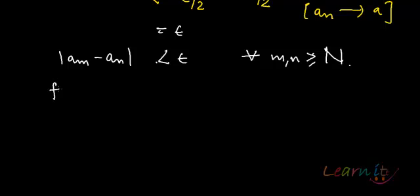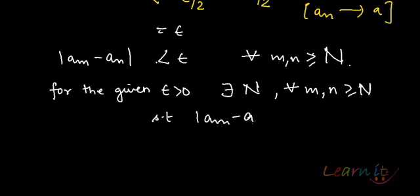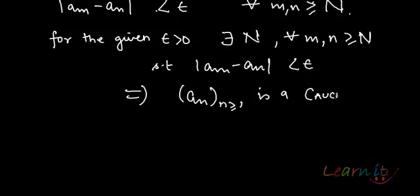That means for the given epsilon greater than 0, there does exist a capital natural number N such that for any m and n greater than or equal to N, the distance between a_m and a_n is less than epsilon. That implies that a_n is a Cauchy sequence.